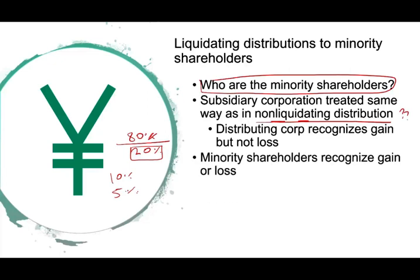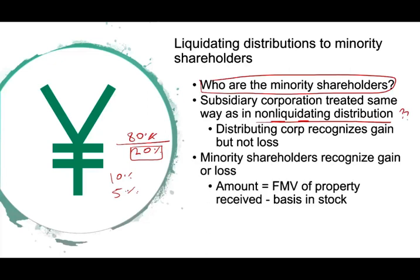How do we compute the gain or loss? We look at the fair market value of the property received, we deduct any debt against that property, minus our basis, to determine the gain or the loss.